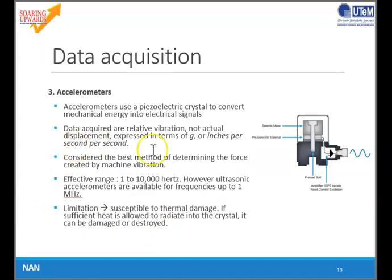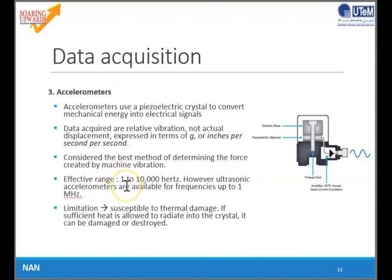Next is accelerometers. Accelerometers use a piezoelectric crystal to convert mechanical energy into an electrical signal. The data acquired are relative vibration, not actual displacement, and can be expressed in terms of G or millimetres per second squared. They are considered the best method of determining the force created by machine vibration. The effective range is much bigger, between 1 to 10,000 Hz. Ultrasonic accelerometers are available for frequencies up to 1 megahertz. The limitation is susceptibility to thermal damage — if sufficient heat is allowed to radiate into the crystal, it can be damaged or destroyed.